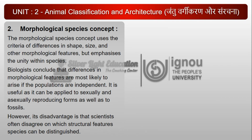2. Morphological Species Concept: The Morphological Species Concept uses the criteria of differences in shape, size, and other morphological features, but emphasizes the unity within species. Biologists conclude that differences in morphological features are most likely to arise if the populations are independent. It is useful as it can be applied to sexually and asexually reproducing forms as well as to fossils. However, its disadvantage is that scientists often disagree on which structural features species can be distinguished.